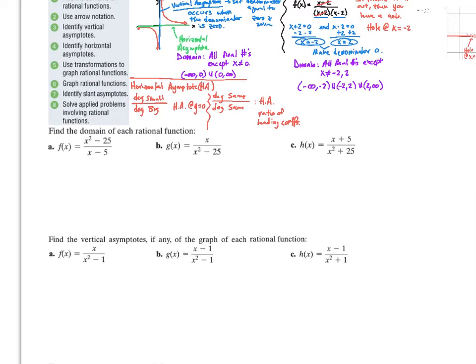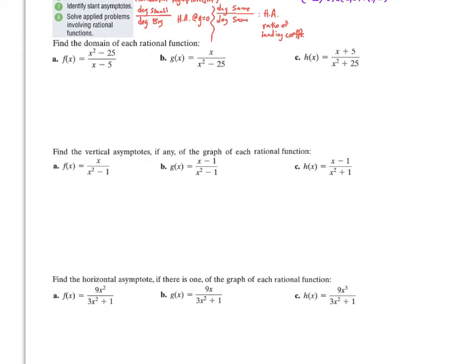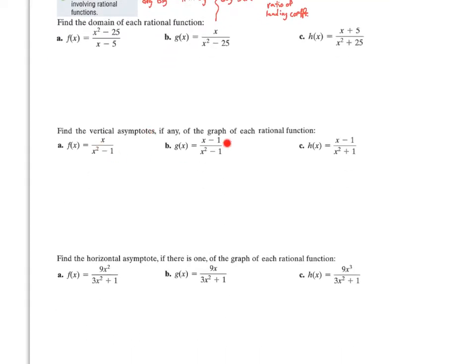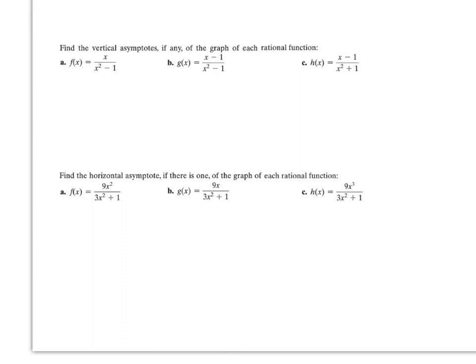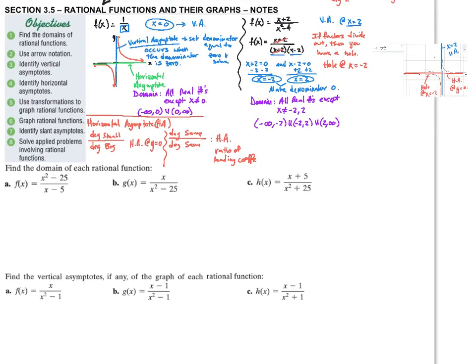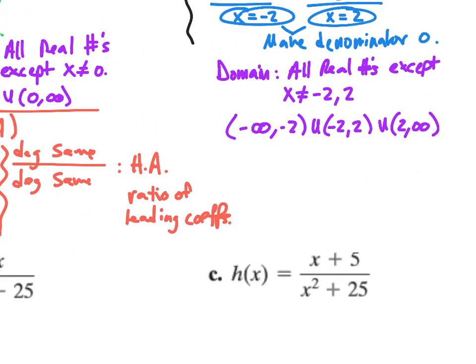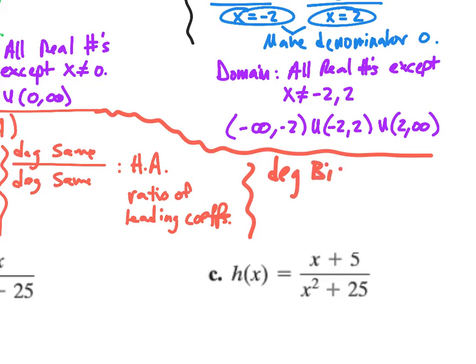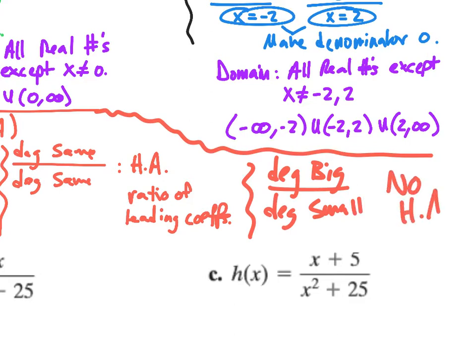In these problems, all you're doing is finding the domain of each rational function — set your denominators equal to zero. For vertical asymptotes, be careful with holes — some problems might not have any, and that's all right. For horizontal asymptotes, if you know what you're doing, this is pretty easy. The last thing I didn't mention: if your degree is big on top over a small degree below, then there is no horizontal asymptote.